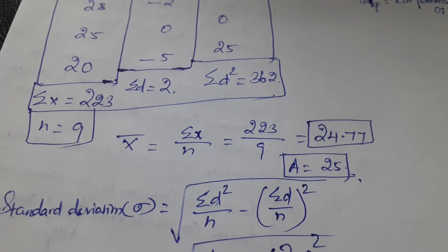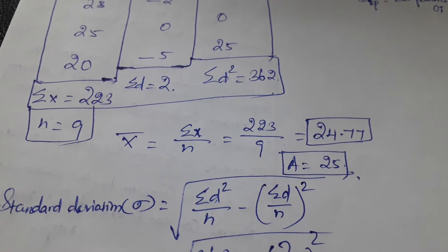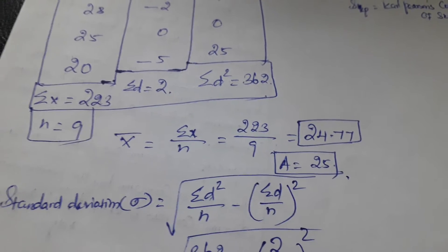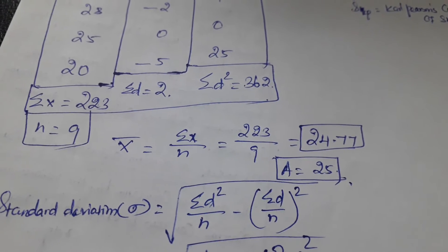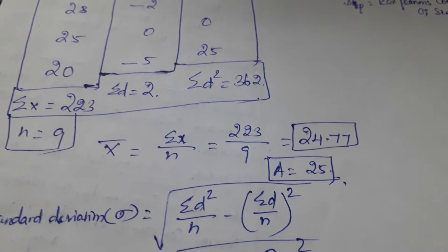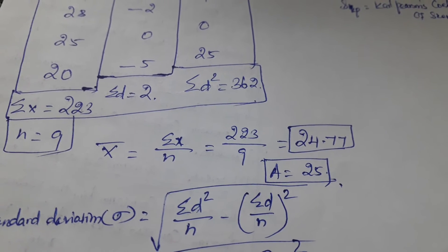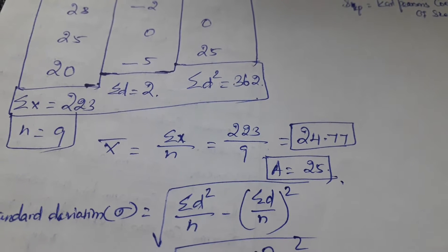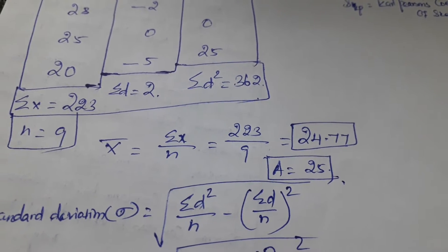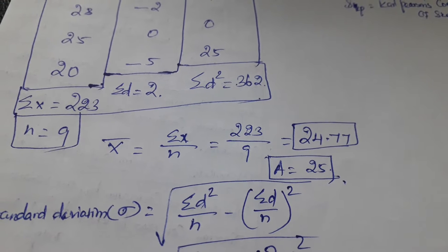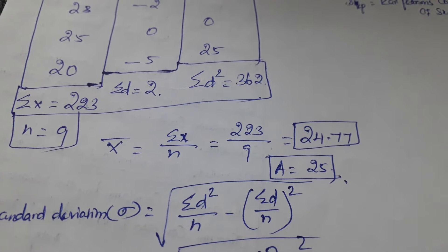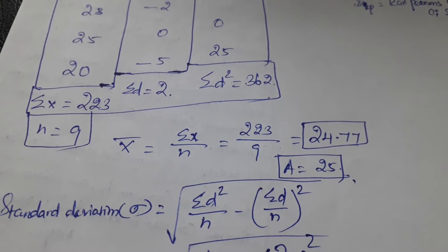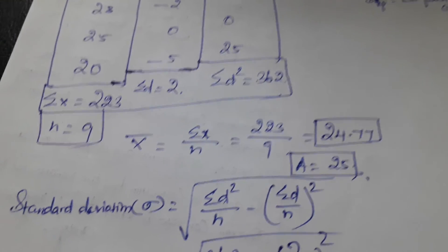Since the mean is in fraction form, we assume a round-up value. The round-up value is 25, which we denote by 'a'. So a = 25. Now we need to calculate t.